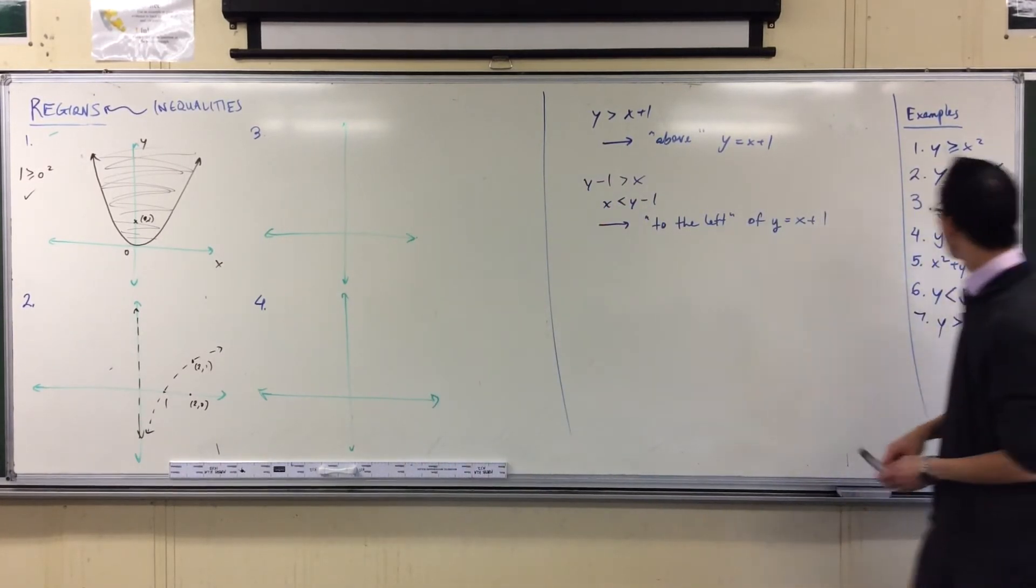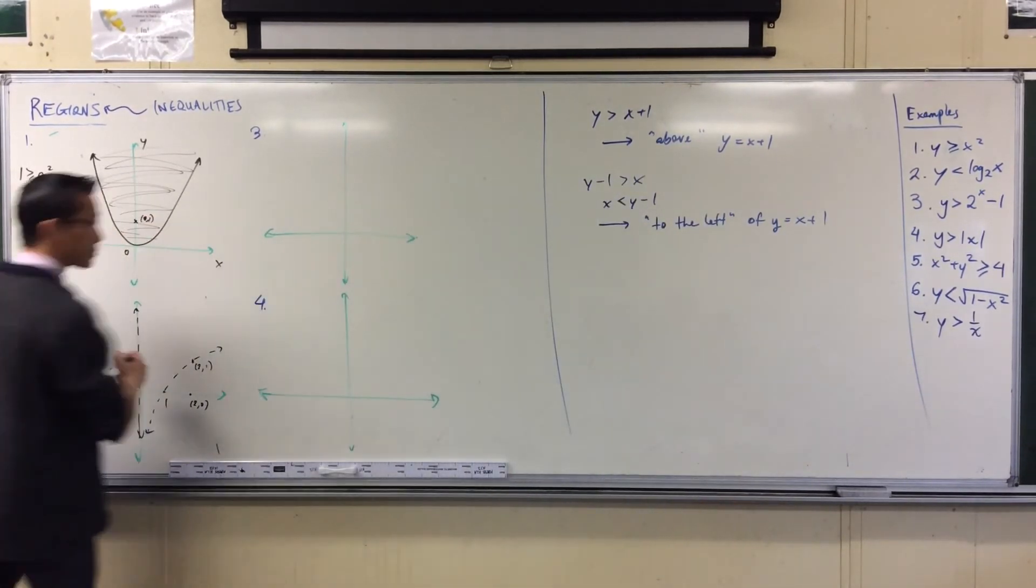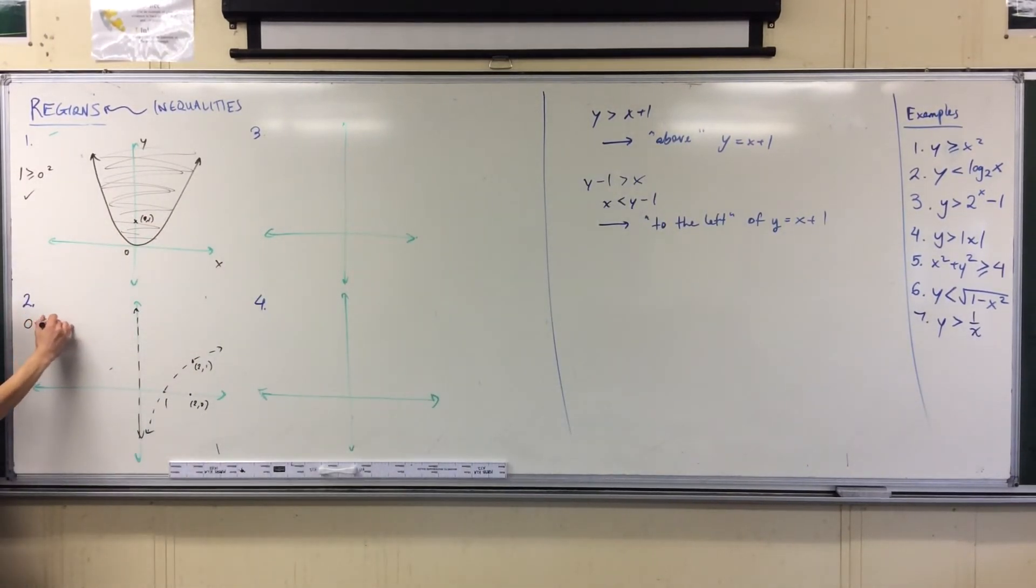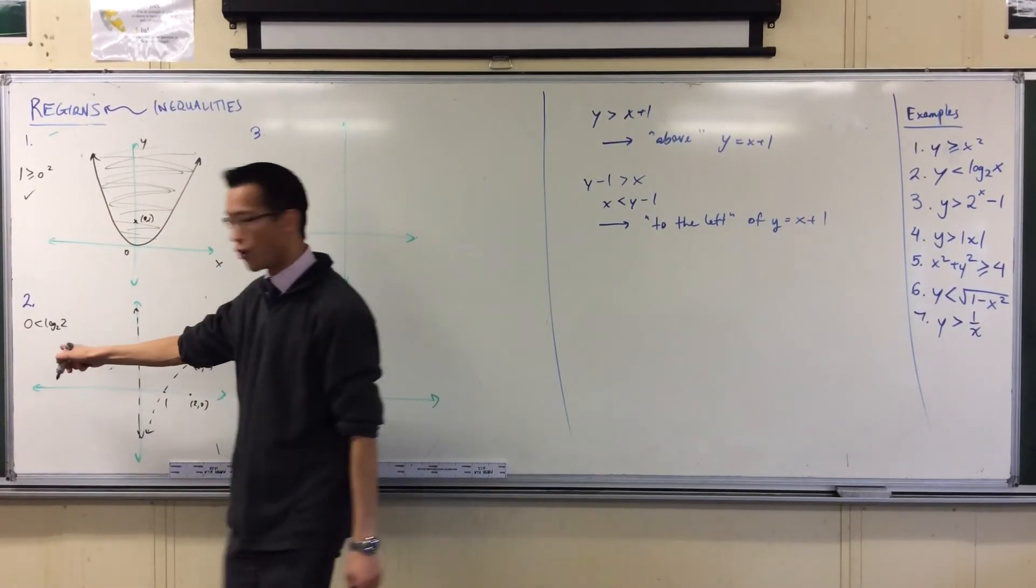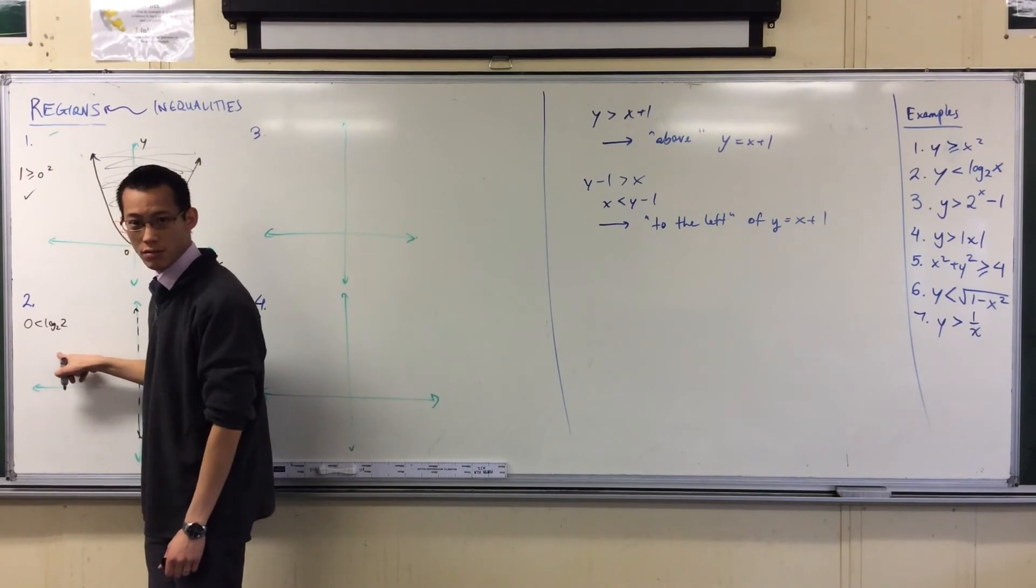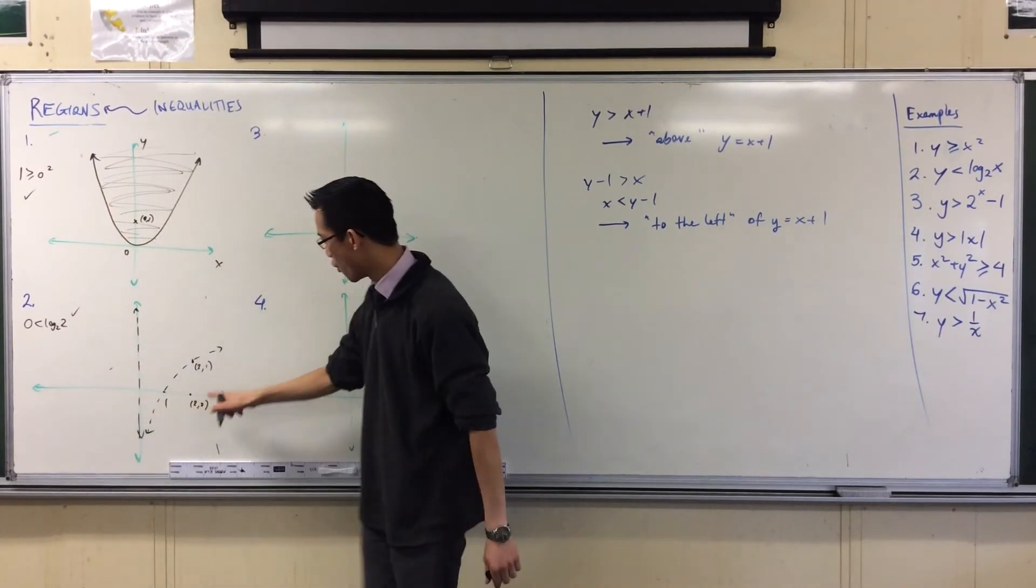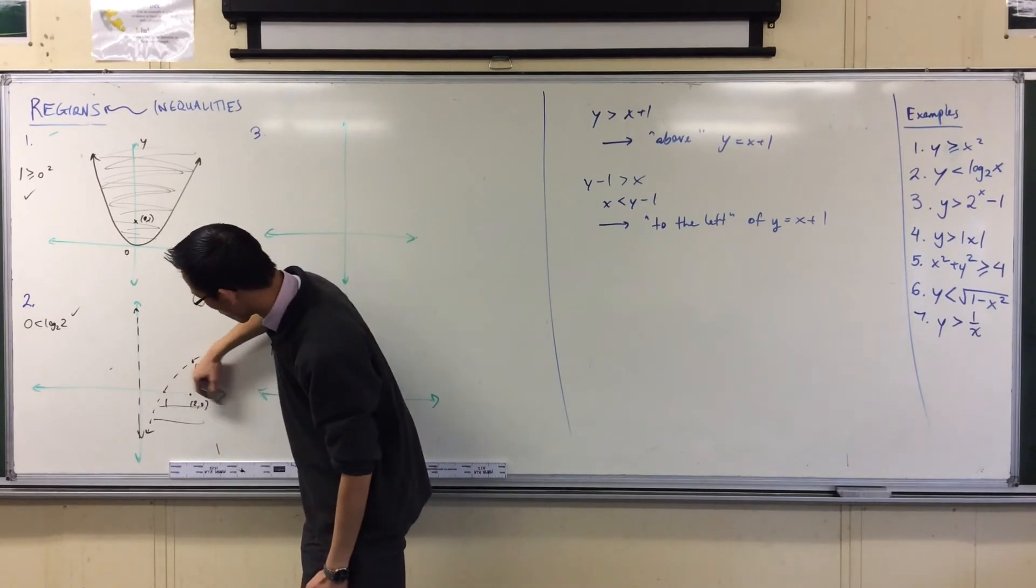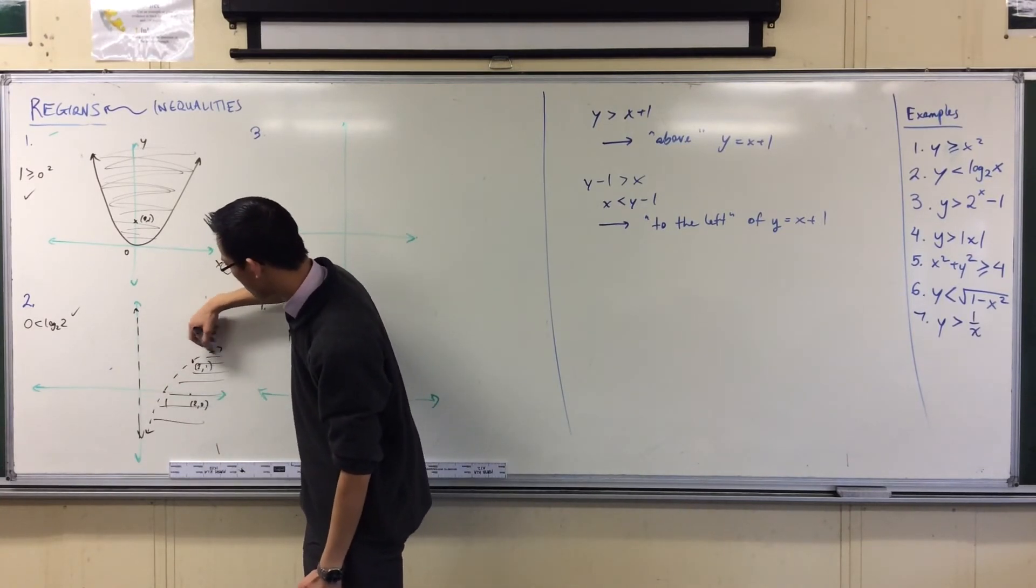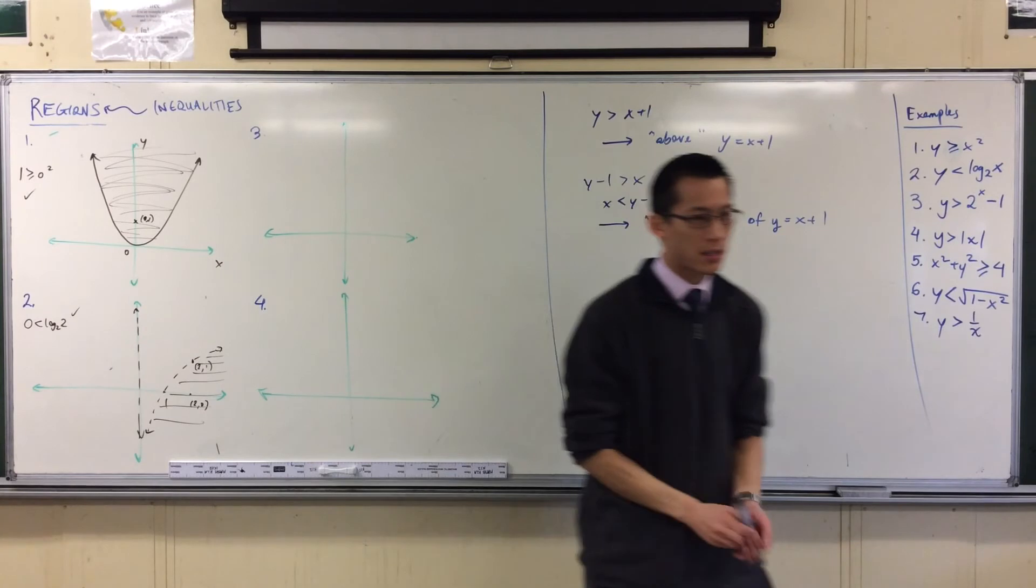Here we go. I've got zero is my y coordinate. And I've got log base two of two. Log base two of two of course is just one. So therefore, is this statement true? Yes. Answer? Yes. So therefore, this point down here which was suggested to us is in the region that we want. That's fine.